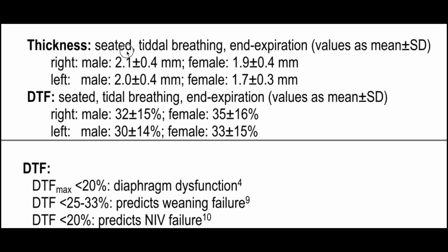Normal thickness values at seated tidal breathing end expiration: in males it is 2.1 ± 4.4 mm and in females 1.9 ± 4.0 mm; the left side is similar. For the DTF, the normal change between inspiration and expiration is 32 ± 15% in males and 35 ± 16% in females.